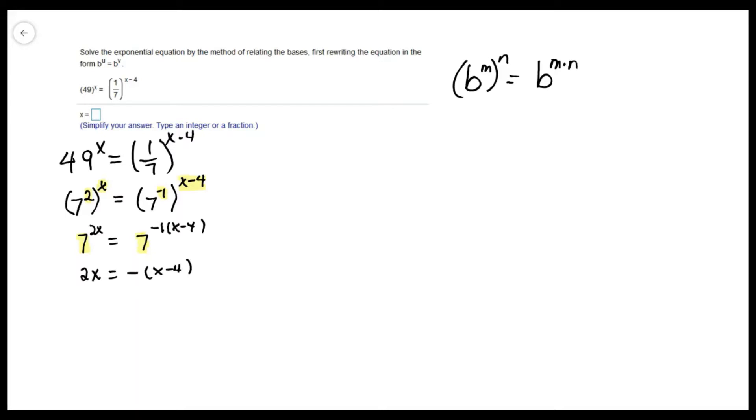I'll distribute that negative to get -x + 4. Add x on both sides. That gives me 3x equals 4. And divide both sides by 3. x equals 4/3.